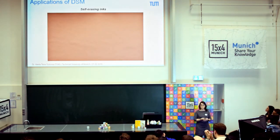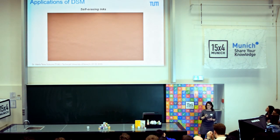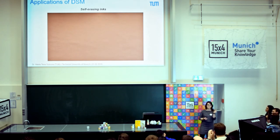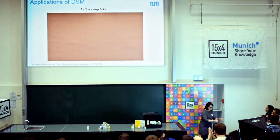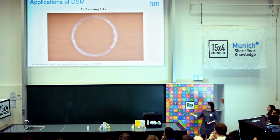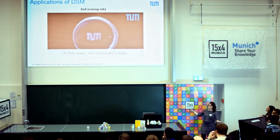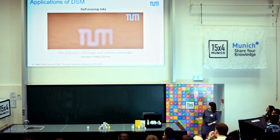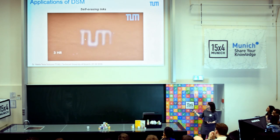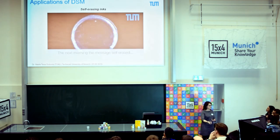We also thought there is a huge problem with paper consumption, because people use paper once and then throw it away. So we thought maybe we can also apply this temporal control to develop self-erasing inks. It would be great if I could write important information on paper for the next two hours, but when I no longer need it, the message just vanishes and I can reuse the paper again. What we did was put our blue building blocks onto a supporting substrate, spray-coat the fuel, and the logo of our university just appears. Because the fuel is being consumed, the message erases over time, so the next morning when I arrive at my office, my paper is blank again and I can reuse it.